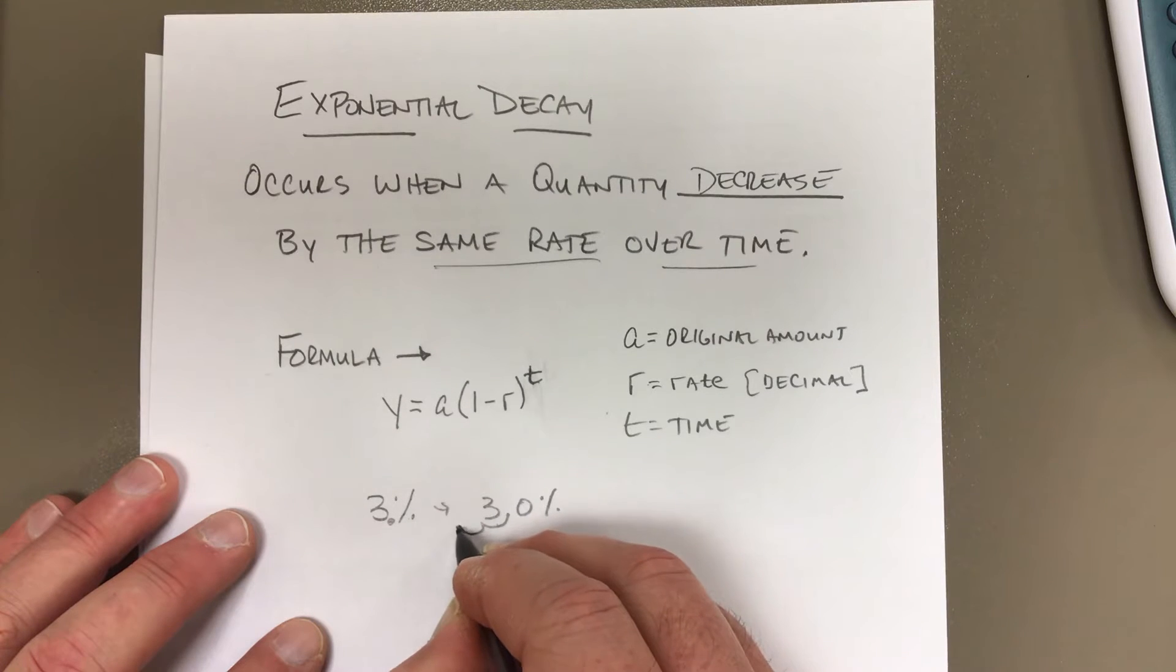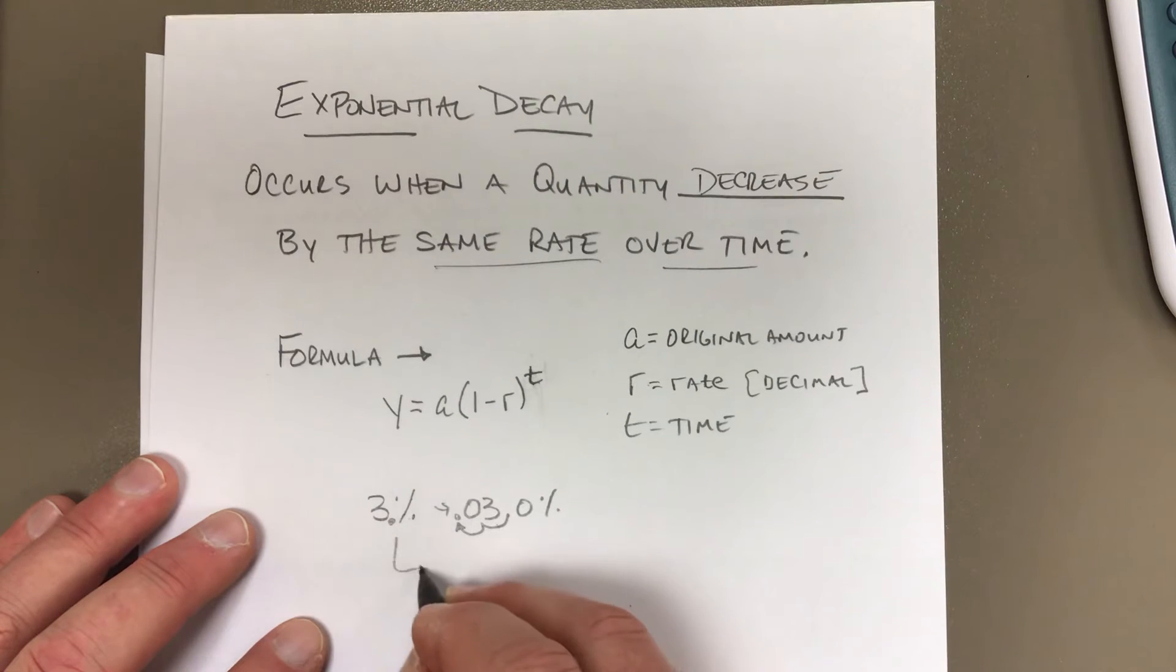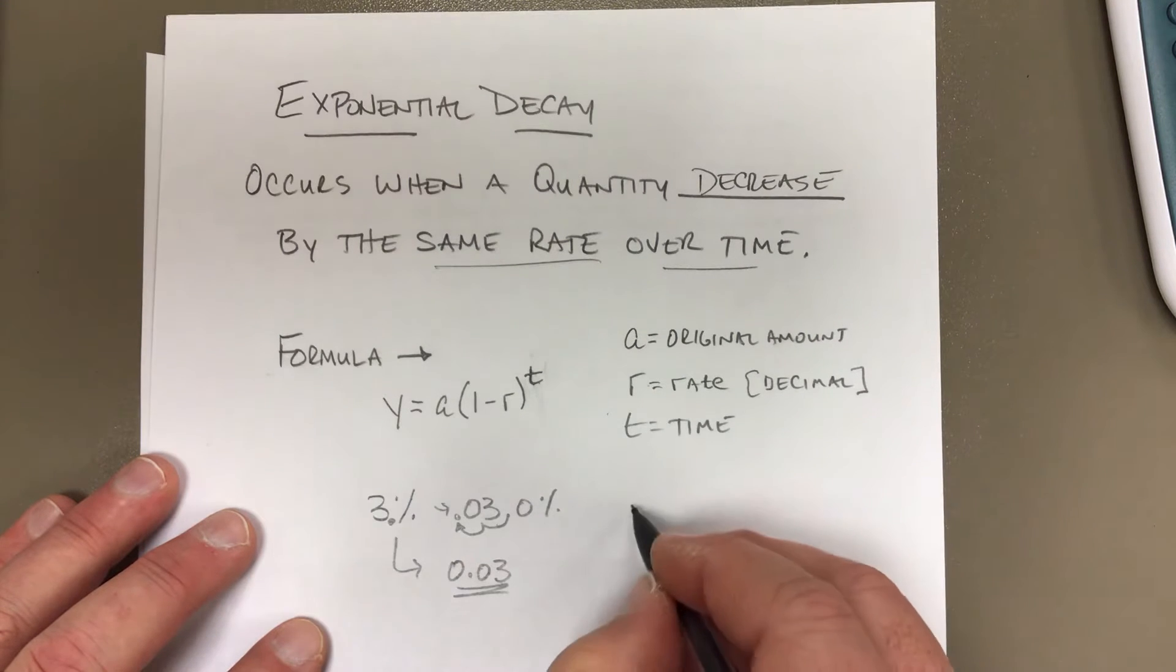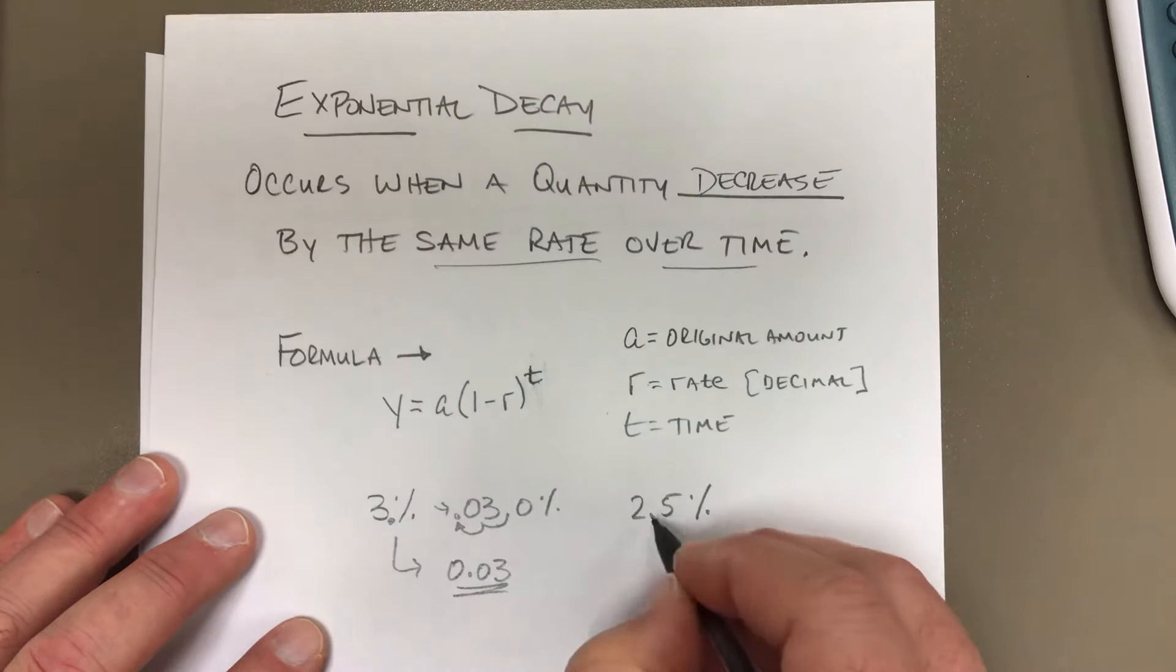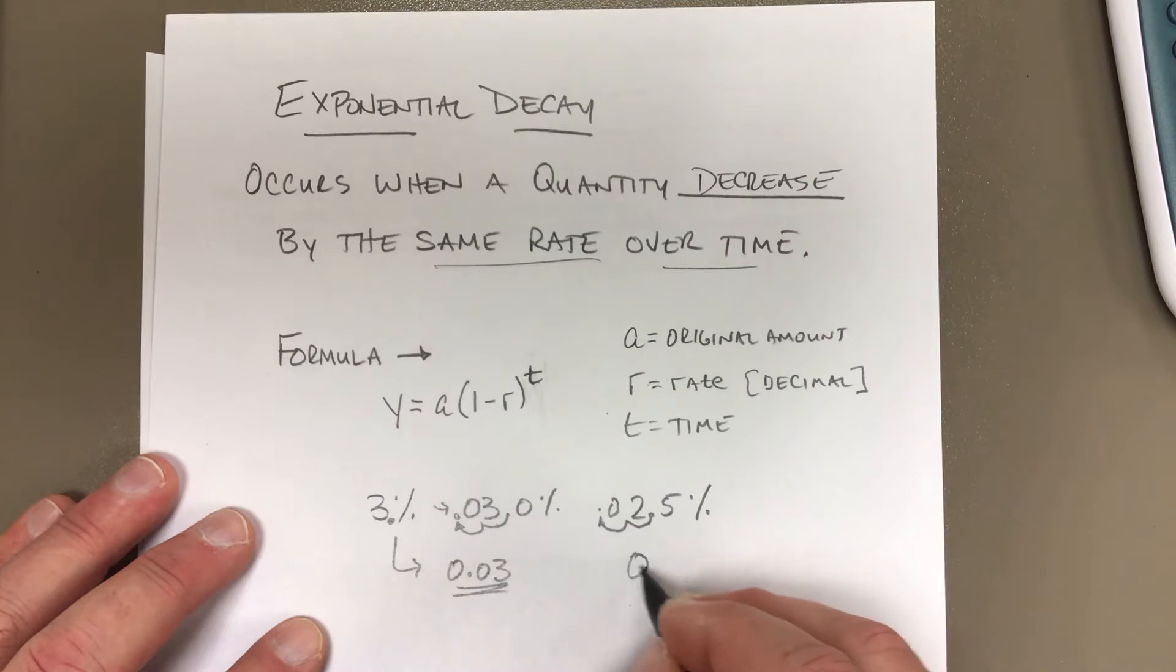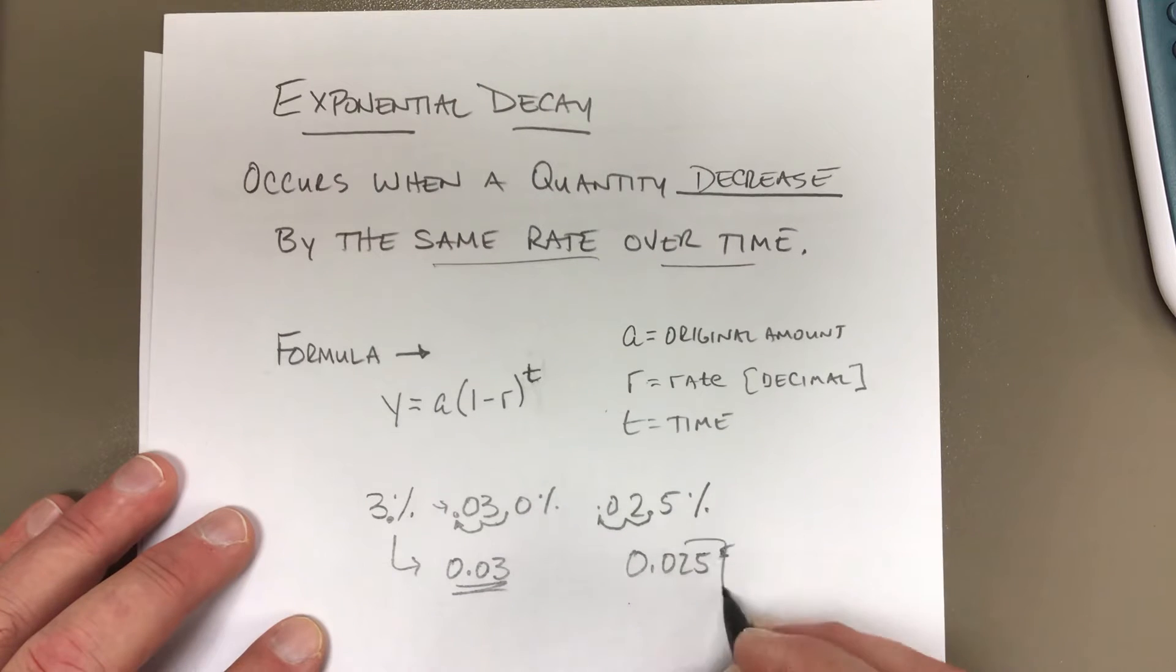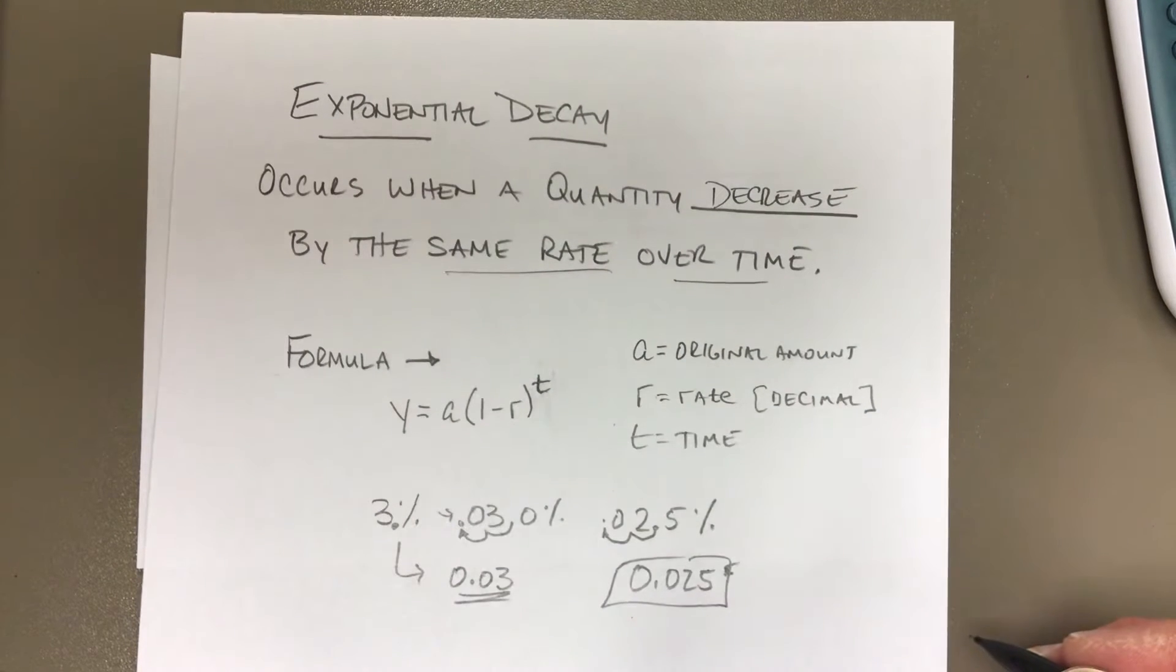This is really 3.0%, but we don't ever put the 0.0. So for us to change it to a decimal, we have to move it to the left two spots. Now the decimal goes here, and we fill it in with the zero. So 3% is 0.03. They can throw a decimal in here, like 2.5%. We're moving it this way, we fill in with the zero, and so now this is 0.025. Make sure that you're always moving the decimal to the left.